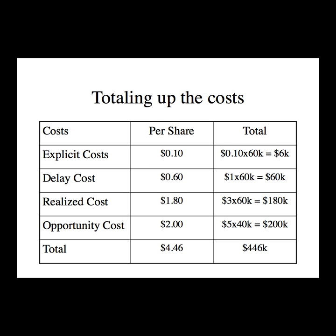Now add up all the costs. Explicit costs: assuming $0.10 per share, 60,000 shares × $0.10 = $6,000. Delay cost from the red rectangle: $60,000. Realized cost from the beige rectangle: $180,000. Opportunity cost from the blue rectangle: $200,000. Adding them all up gives $446,000 as the total transaction cost attributable using the implementation shortfall model.